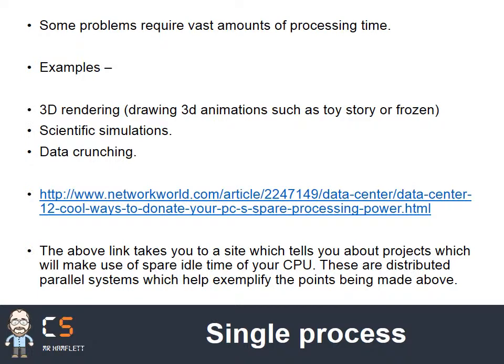For a single complex process, examples might be 3D rendering — if you've ever watched Toy Story or Frozen or any Pixar film, those require a lot of 3D calculations and take a lot of processing time. Scientific simulations can also be incredibly complex and link very much into data crunching. A lot of scientific simulations have a lot of data which you require in order to get the answers, and these can take days, weeks, months, or even years to calculate.